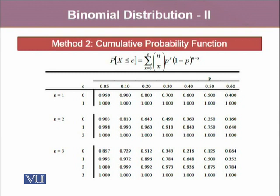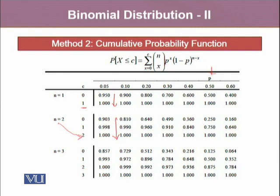This given table is the cumulative probability distribution for the binomial probability distribution. Over here, with N equals 1 and C, the number of possible successes that can occur within a trial, and the probability P which is success for that specific event, are given on the column. This shows that as we increase the number of X up to the value equivalent to the number of trials N, the last probability will always turn out to be 1, which adds up all the previous probabilities. And it goes on for all different values of P, N, and C or K.